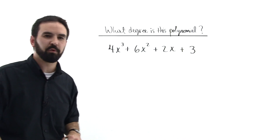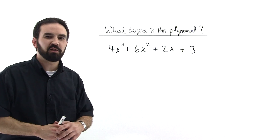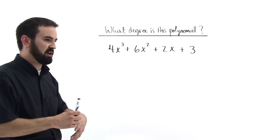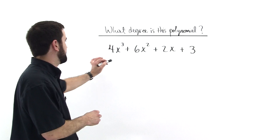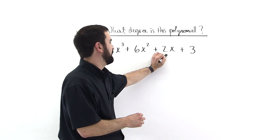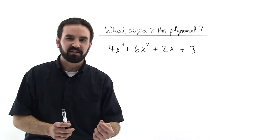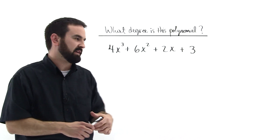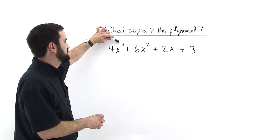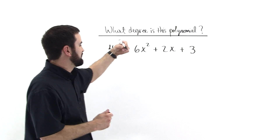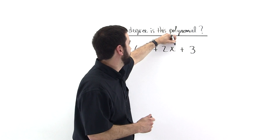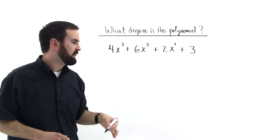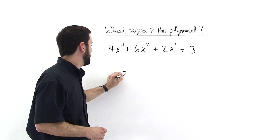What is the degree of this polynomial? So let's look at the exponents of the variable terms — the terms that have x involved in them. This one, this one, and this one. You just look at the exponents and see which number is the biggest. Three is bigger than all the others — there's an understood exponent of one here for this x value. So because three is the largest exponent, this is a third-degree polynomial.